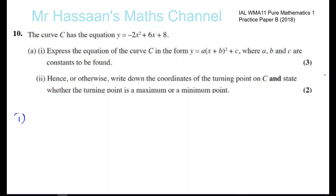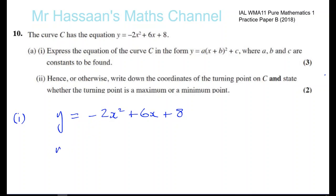So part 1 of the question asks us to express it in completing the square form. We start off with y equals minus 2x squared plus 6x plus 8. Now we want to write it in complete-the-square form. In order to do that, I need to have in front of the x squared a coefficient of just 1 — I don't want this minus 2 here. So I'm going to write that minus 2 outside in a square bracket, and then write inside here x squared, so that if I expand I get minus 2x squared.